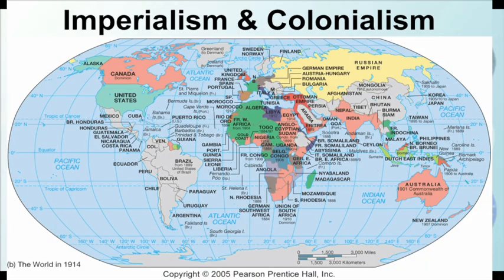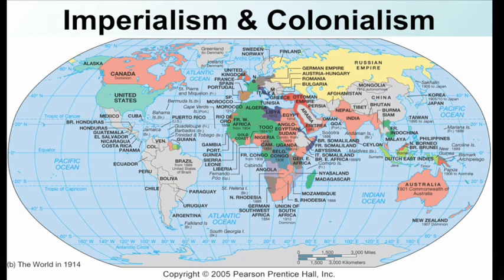By 1914, imperialism and colonialism had gobbled up much more of the world. Sub-Saharan Africa had been divided between European powers. There was some independence in Latin America, but other areas including Southeast Asia, India, Australia, and Canada were within the realm of colonial rule.